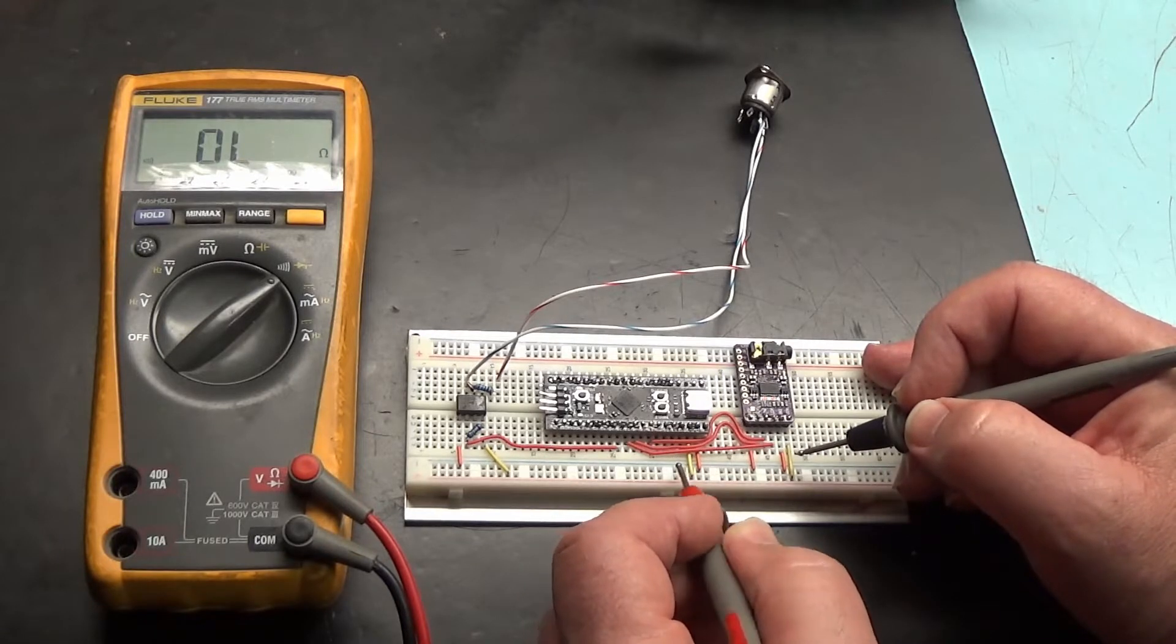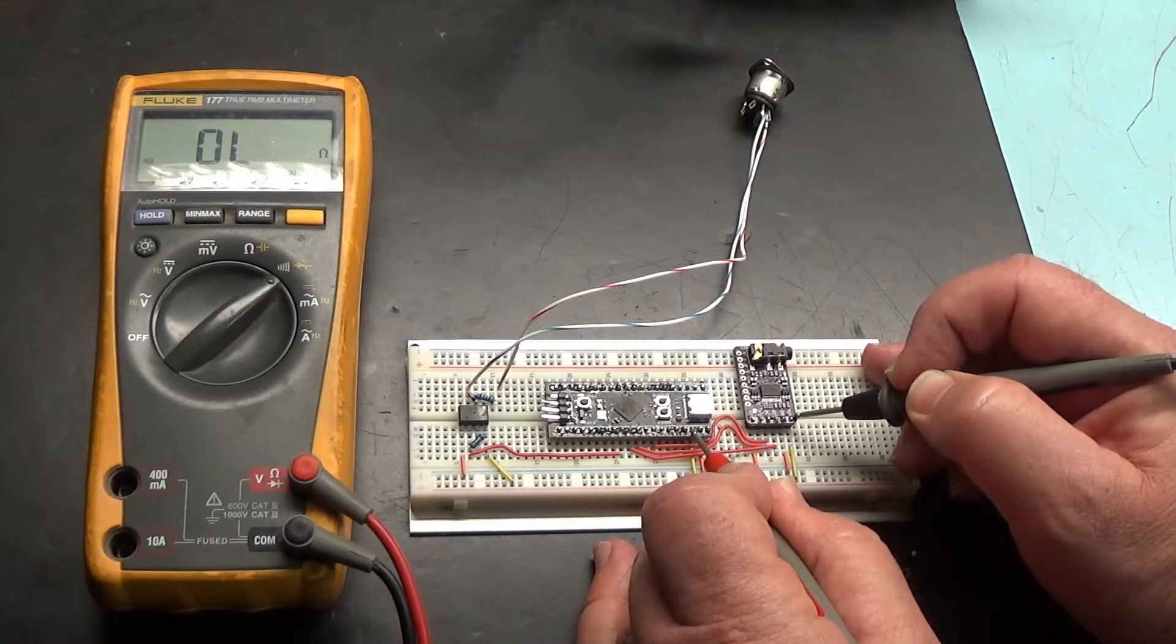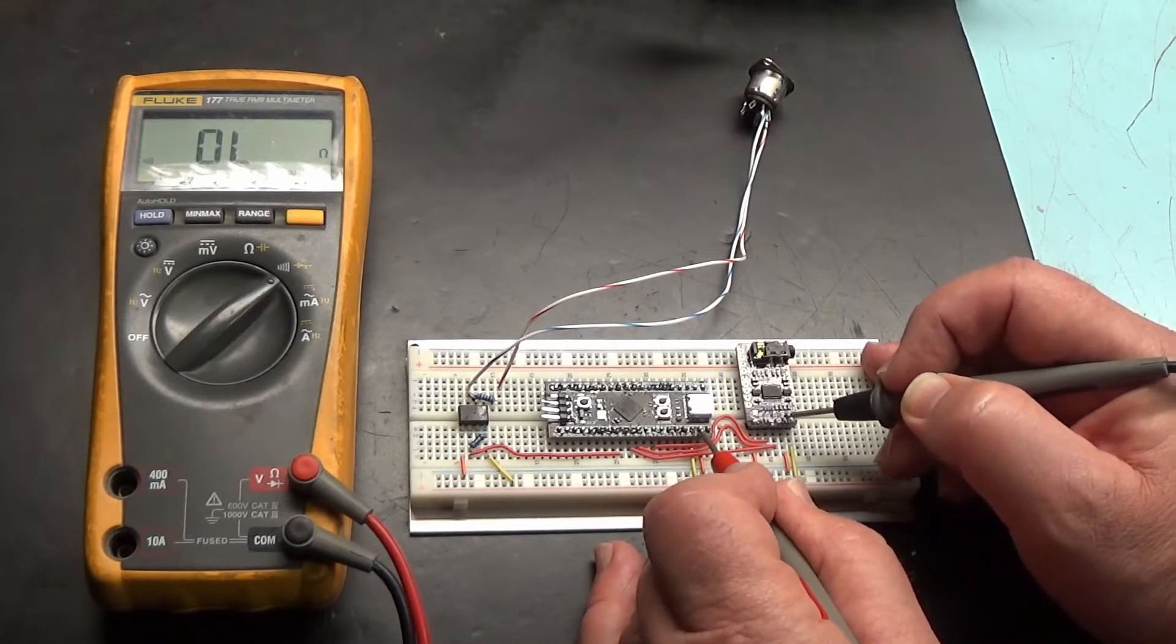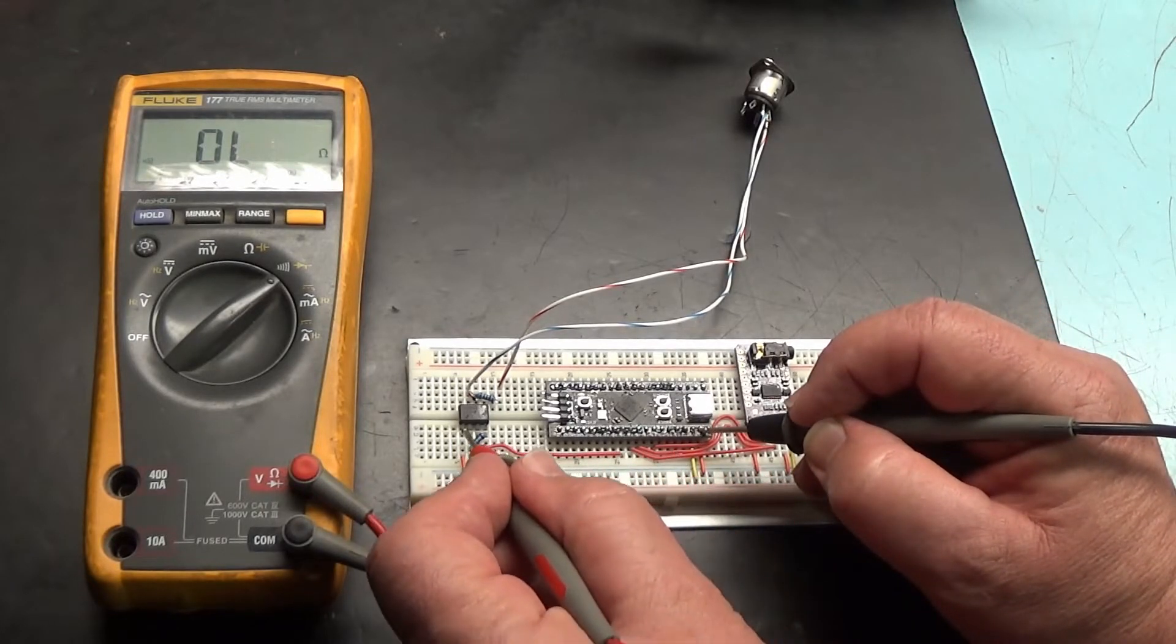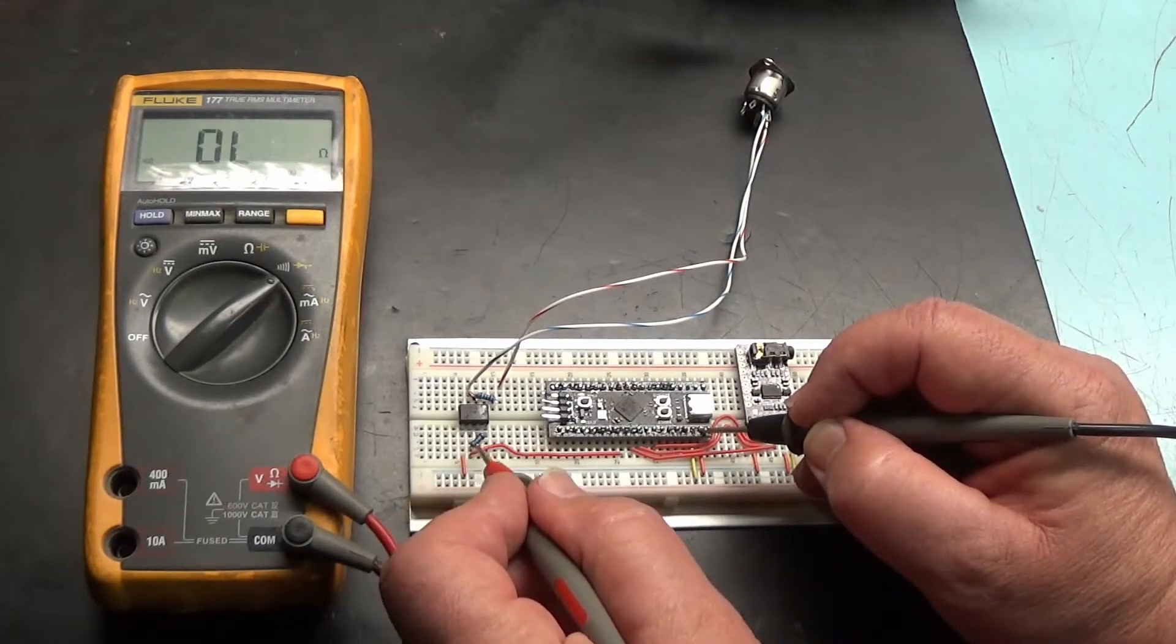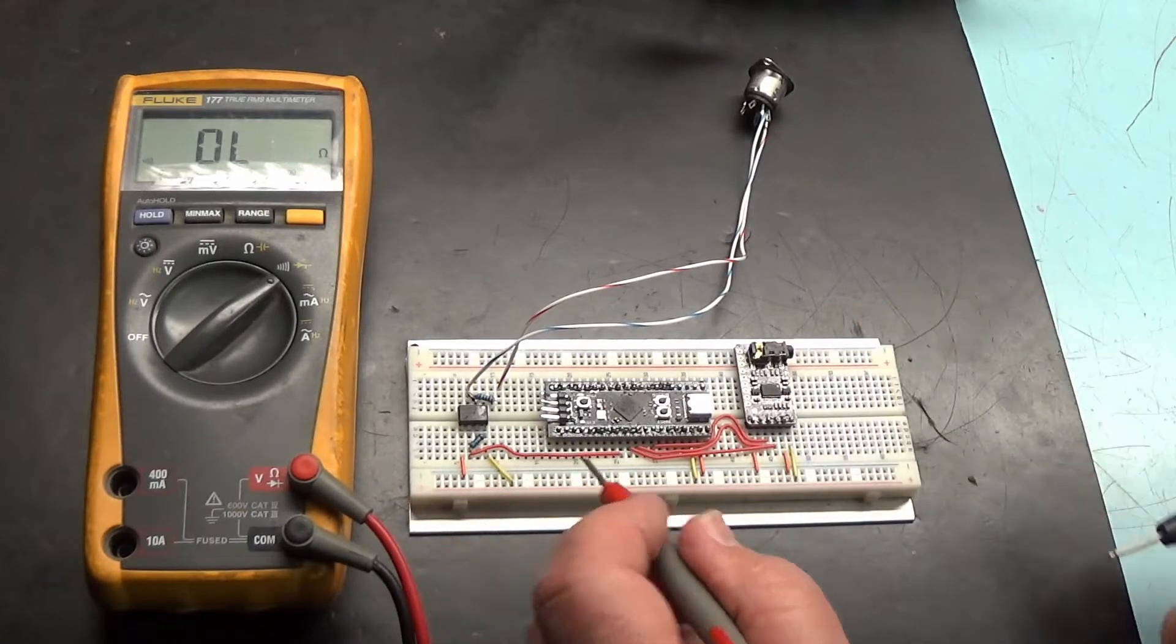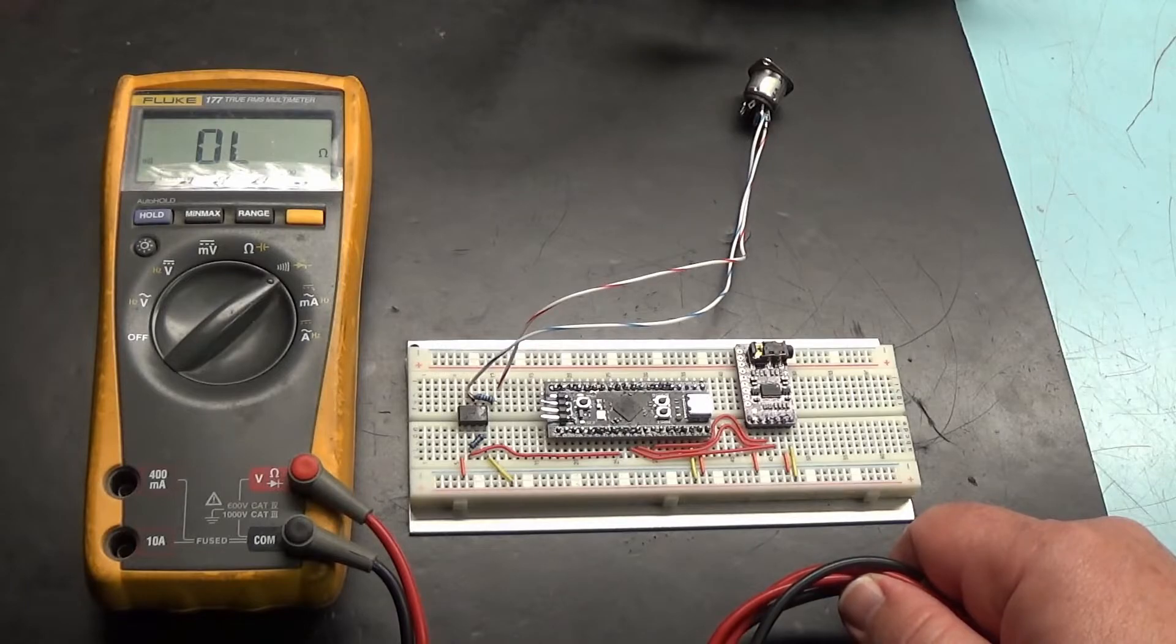I can also test 3.3 volts from the black pill board to the digital analog converter board. Ground. And likewise to the IC chip. You would be amazed what such a simple test could help you realize what may not be working correctly.